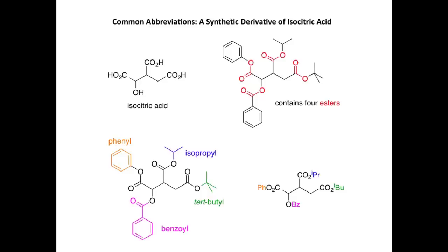This simplified representation is shown here — as you can see, it is a much simpler representation of the same molecule. Here's the phenyl group, the benzoyl group, the tertiary butyl, and the isopropyl group. It's important to be able to recognize and use common abbreviations when drawing organic structures.